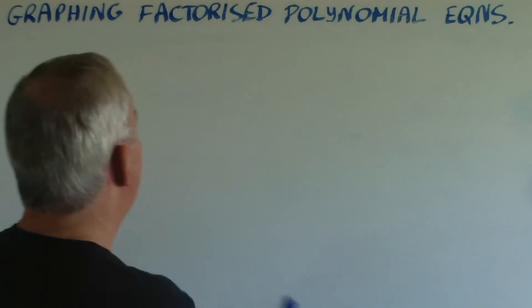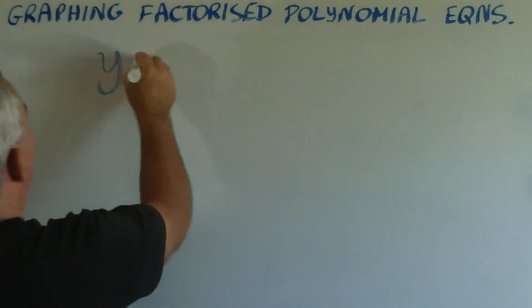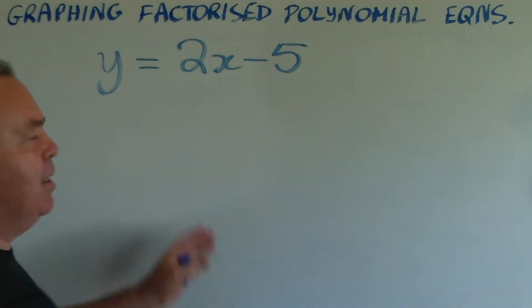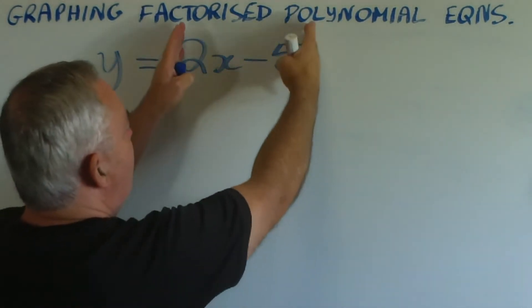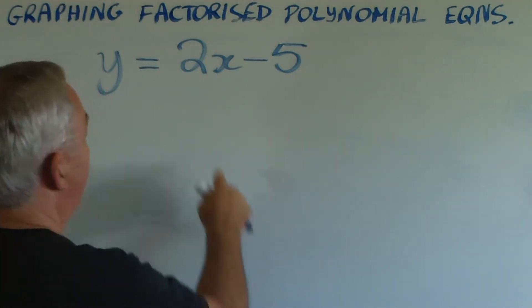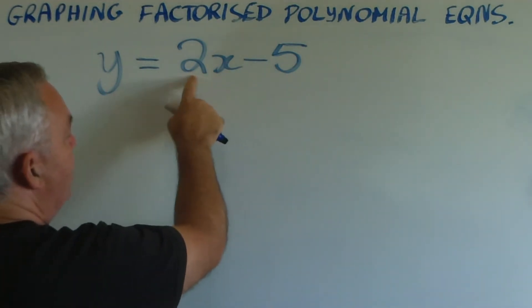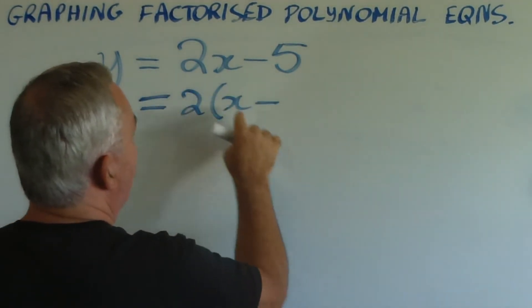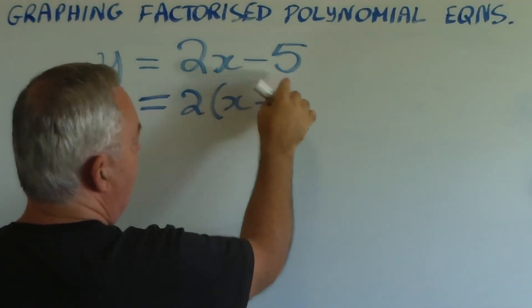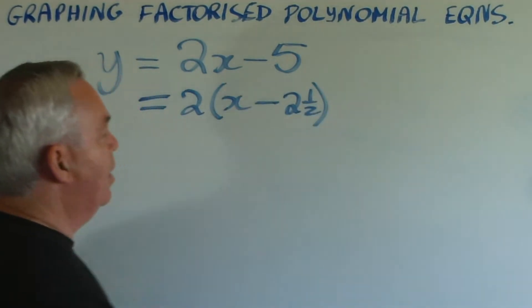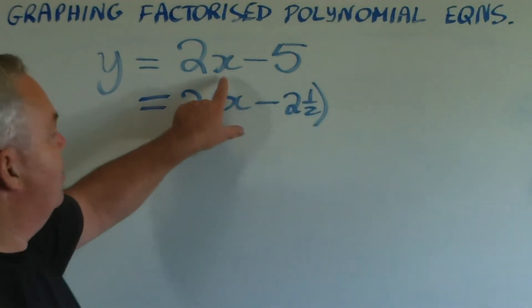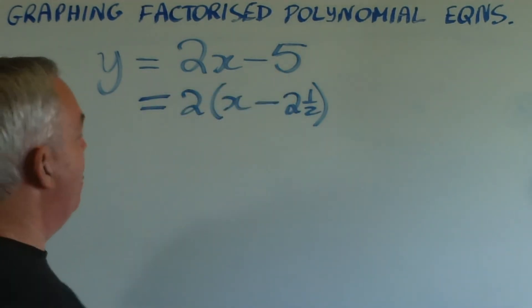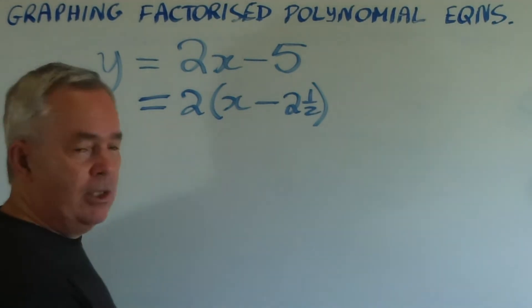I'm going to choose a fairly simple line, y = 2x - 5. And we can consider this as a polynomial with one factor. Notice the coefficient of x is 2, and we can remove that as a common factor. Now, two into five goes two and a half times, or 2.5 times. So two times x is 2x, and two times minus two and a half is minus five. And this is the factorization that we would like.